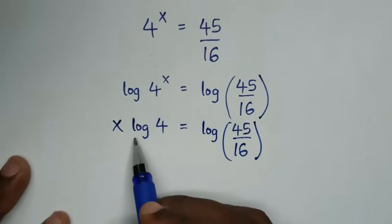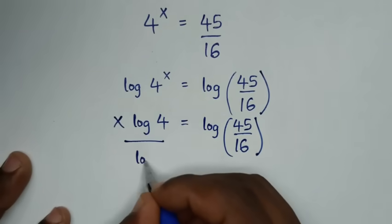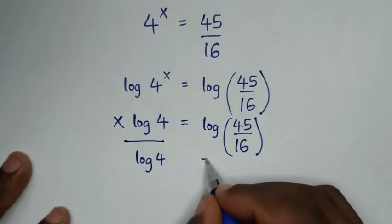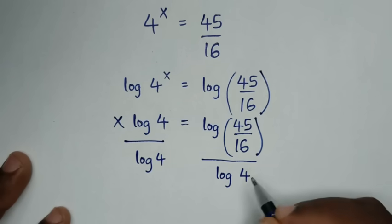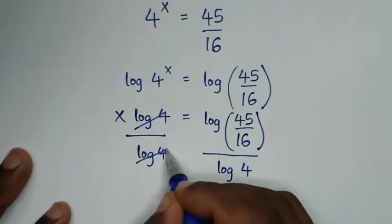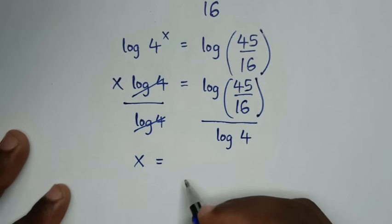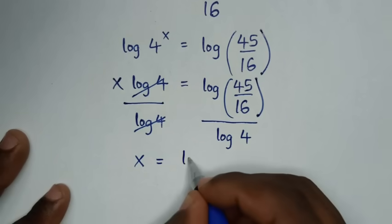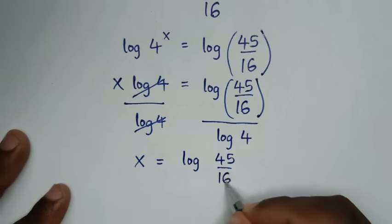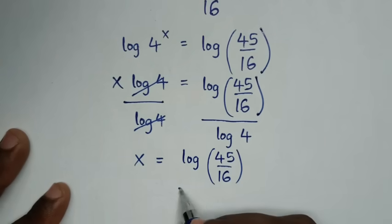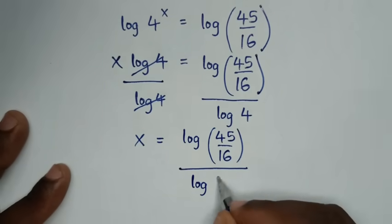Then we will divide by log of 4 on both sides. The log of 4 terms will cancel, and it will be x is equal to log of 45 over 16, all over log of 4.